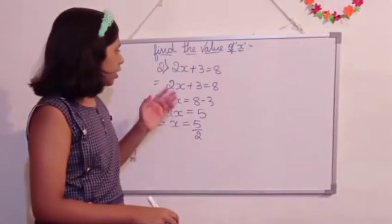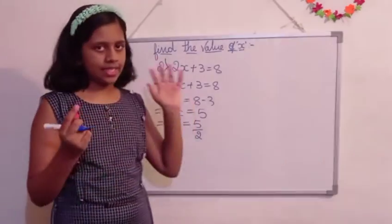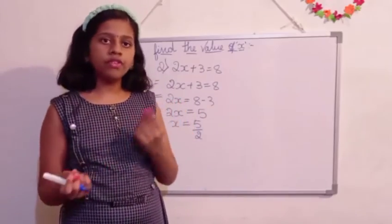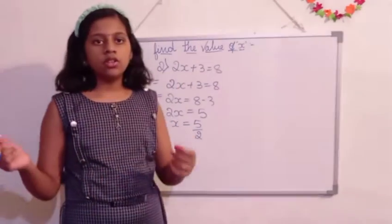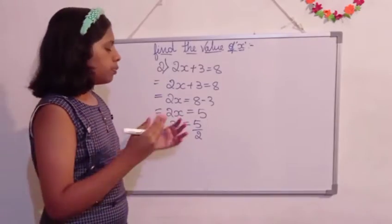In this equation, we cannot take the points there. So we are going to leave it as it is. If we take point also, we will get this number only. If we take this, we will get point number only, like 2.5.